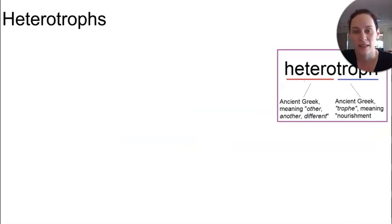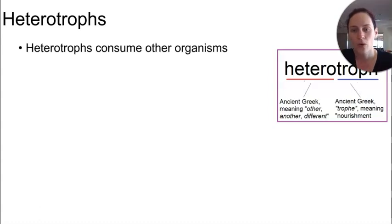Heterotrophs are other feeders or consumers. We're not really talking producers here at all. So all the animals and fungi are considered to be heterotrophs, which gain their organic compounds and therefore energy from other organisms.